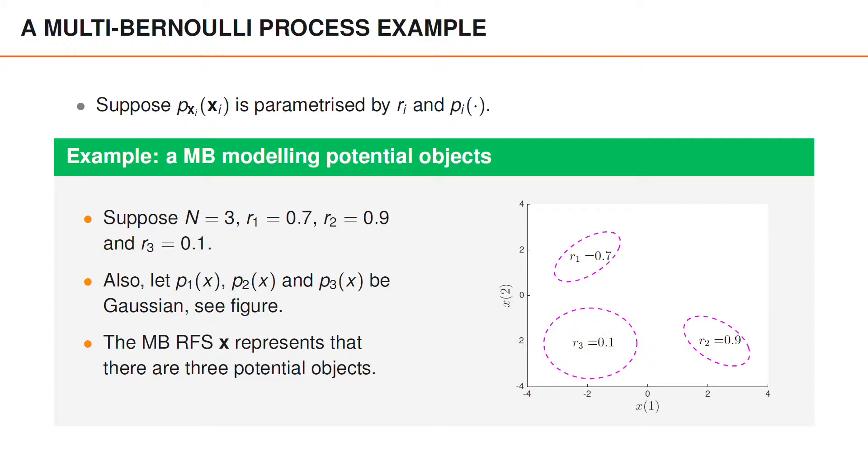Since the three potential objects are assumed independent of each other, we may have 0, 1, 2 or 3 objects present.